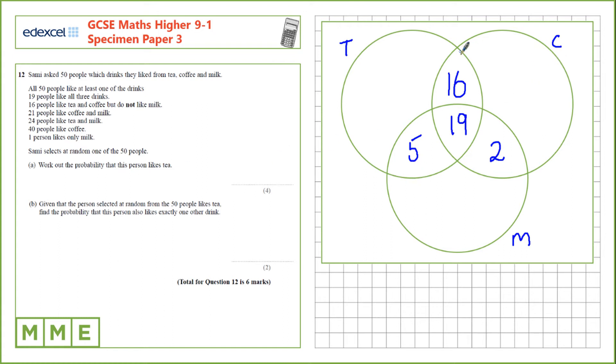40 people like coffee, so in total this section should have 40 people. At the moment we have 37 in total, so we need to add 3. 1 person likes only milk, this is the only milk section, so that's 1 there.